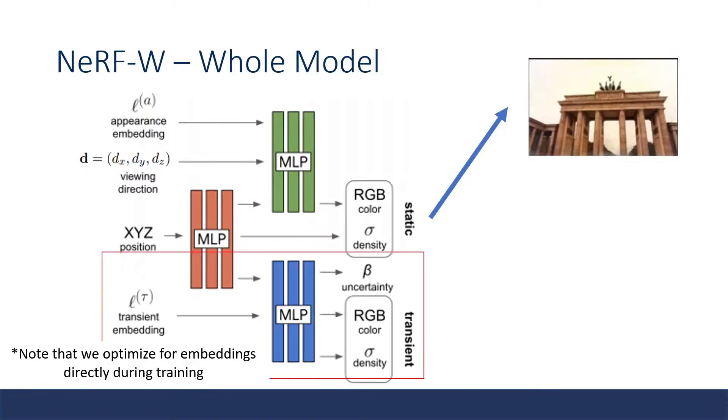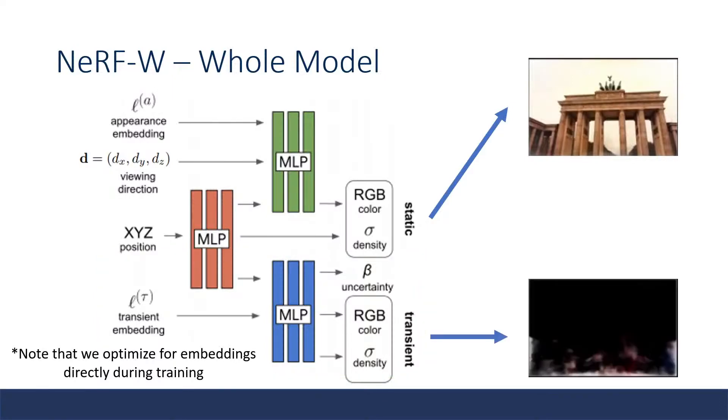NeRF-W addresses this problem by introducing a transient portion of the model. This transient head takes in the transient embedding and outputs the transient color and density as well as uncertainty on the pixels. This transient embedding is optimized during training in the same way as our appearance embedding. We can use this transient color and density to reconstruct transient phenomena, the parts of the image that contain objects like tourists standing in front and occluding our object.